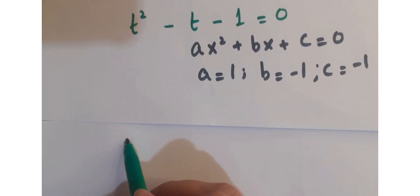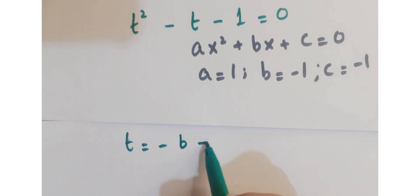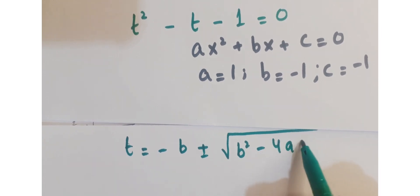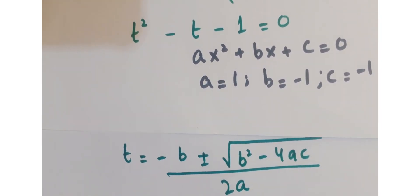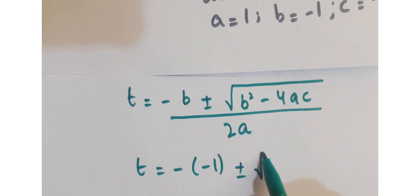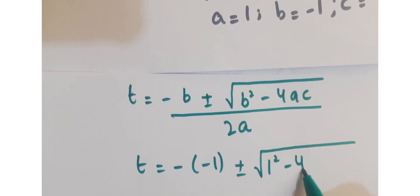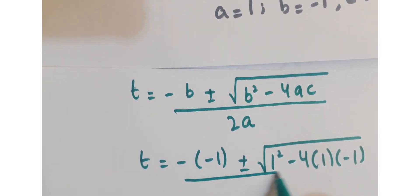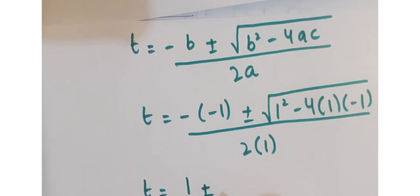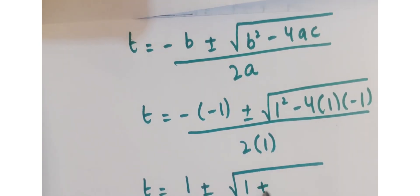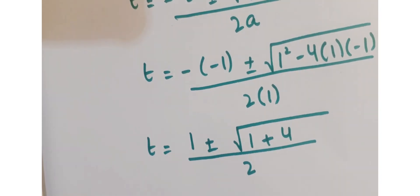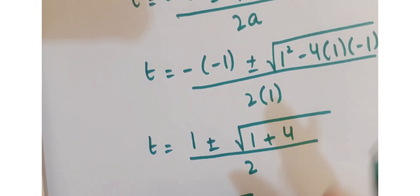Putting the values in the quadratic formula — that is t equals minus b plus or minus under root of b squared minus 4ac, upon 2a — so we have t equals minus 1 plus or minus under root of 1 squared minus 4 times 1 times minus 1, upon 2 times 1. Further, you have t equals 1 plus or minus under root of 1 plus 4 upon 2, or t equals 1 plus or minus under root 5 upon 2.